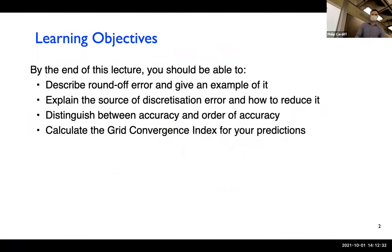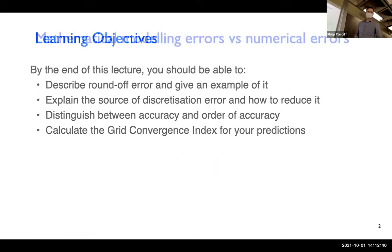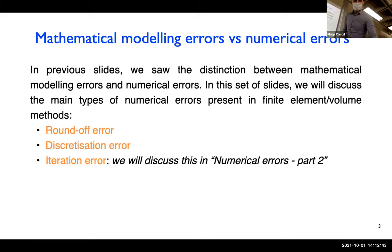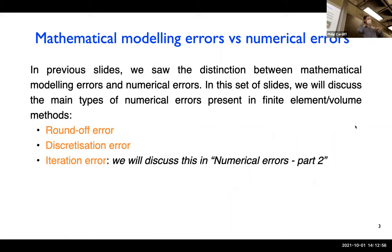I want you to come away with one key idea: understanding the difference between mathematical modeling errors versus numerical errors. Mathematical modeling errors occur when you describe your boundary value problem — your partial differential equations, boundary conditions, material model — and comparing to real life, you introduce errors. These can often be the largest errors.